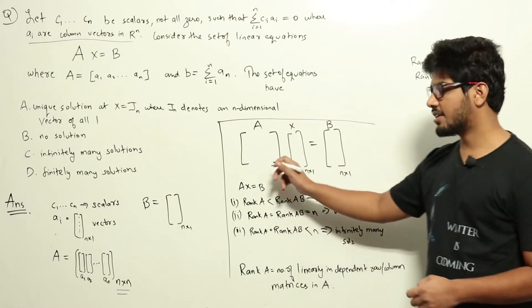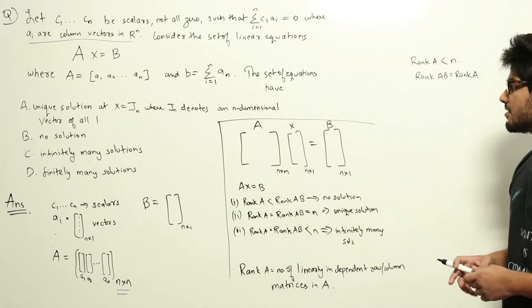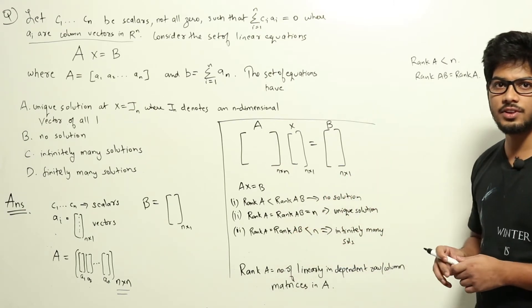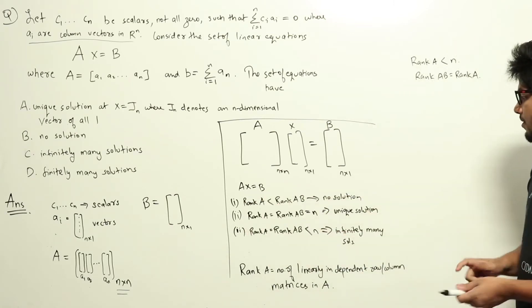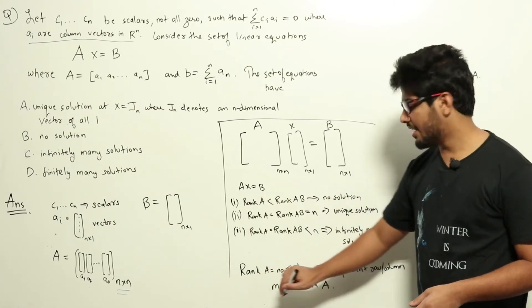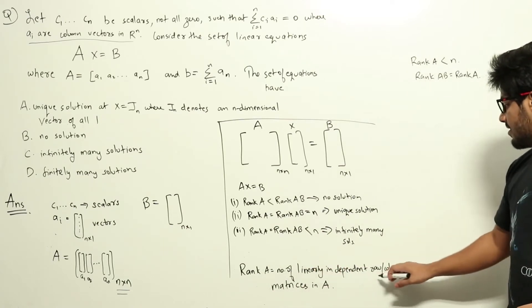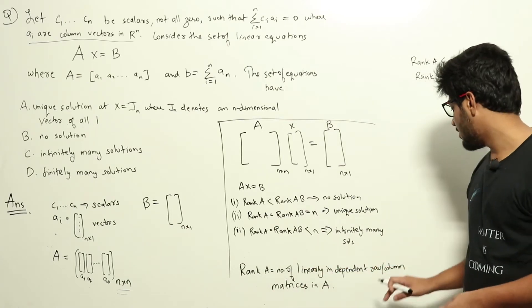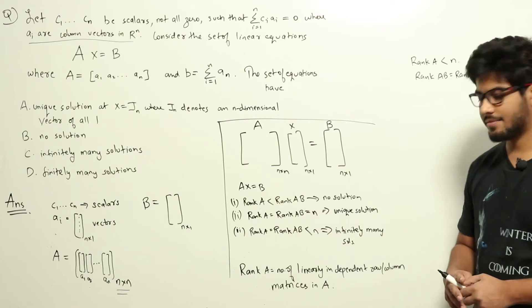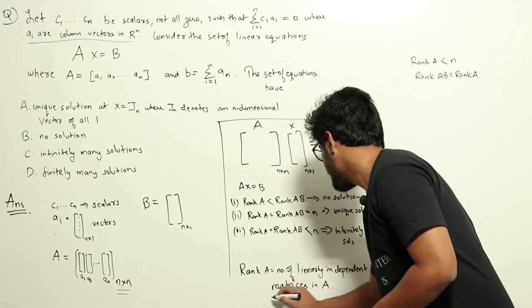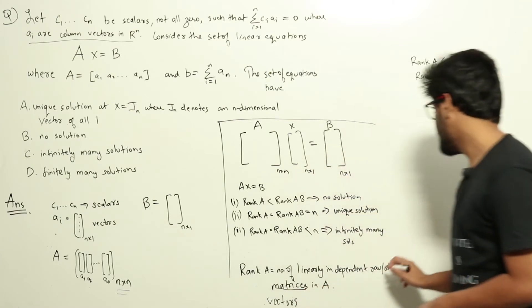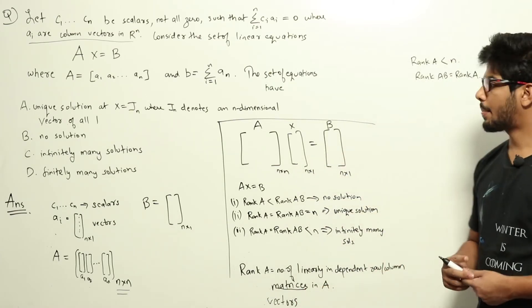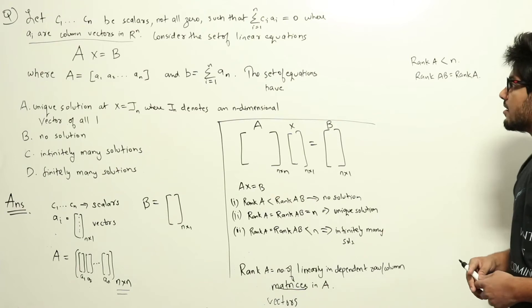You need to understand how to solve these equations from linear algebra. You can refer to video lectures to understand how we got these three points. Also, rank of a matrix A is the number of linearly independent row or column vectors in A.